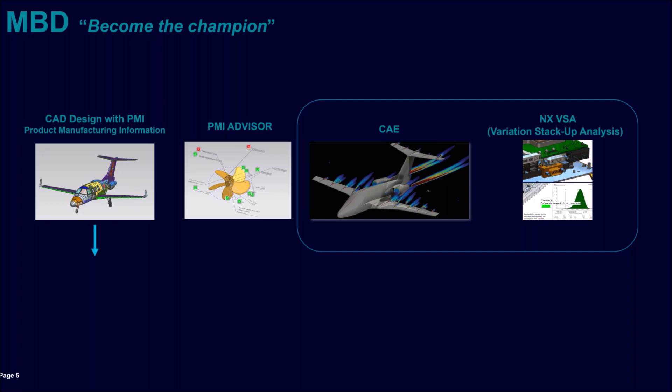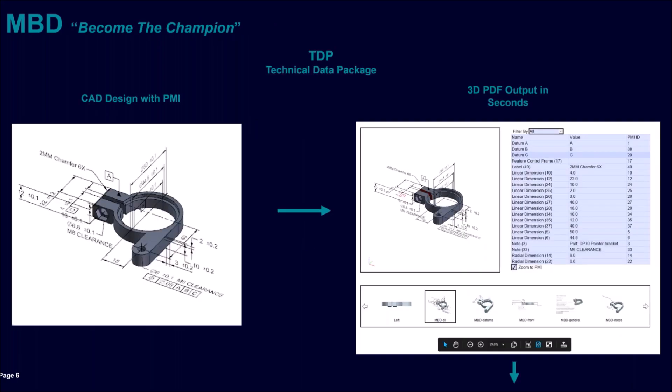That would feed back into our PMI. As we make changes through CAE and through VSA, it's all fed back into CAD. From there, whether we're a design outfit that has things manufactured outside, or a manufacturer, or supplying a sub-assembly, the PMI is going to be fed into the various other branches of the organization or organizations that are bringing the product to life.